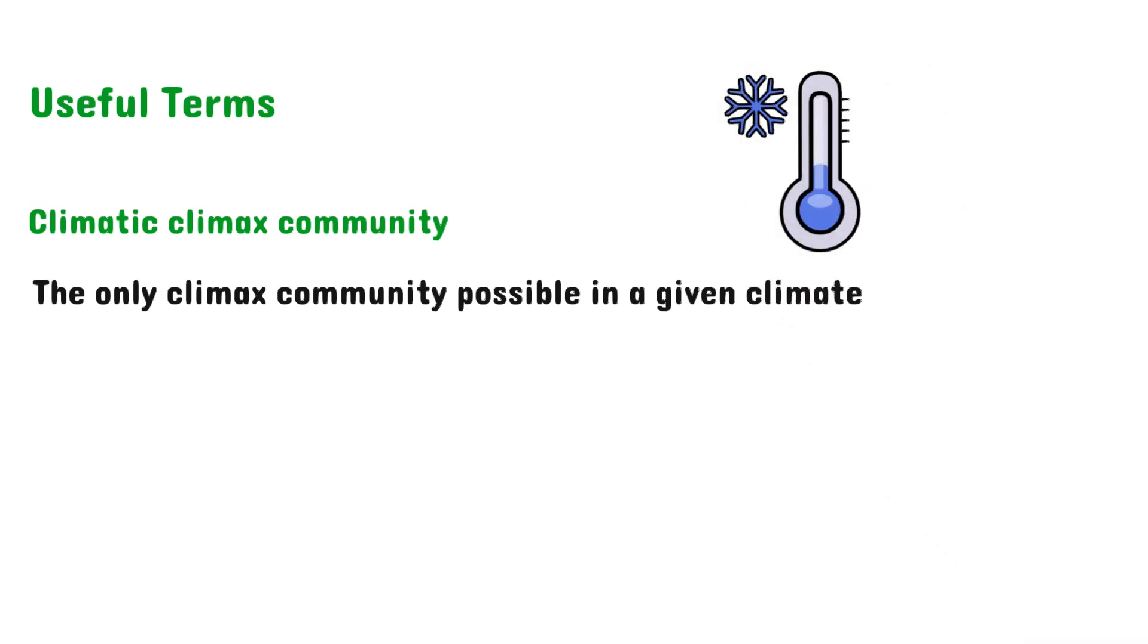So for example, for a cold climate, there's only one possible climax community. And the same for a warm climate, there's only one possible climax community.